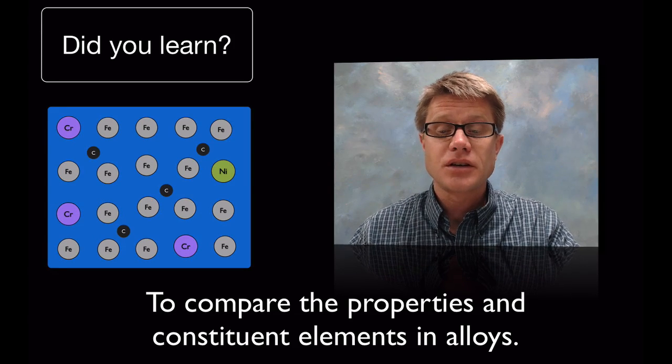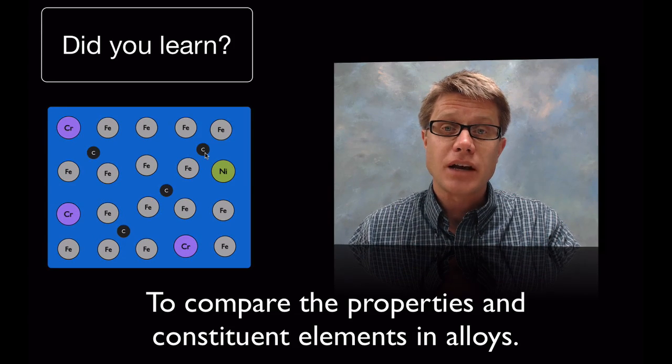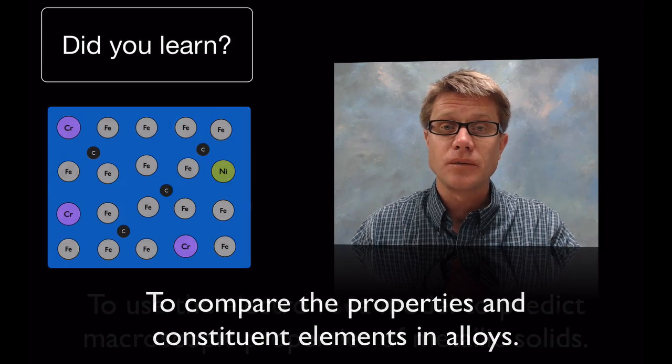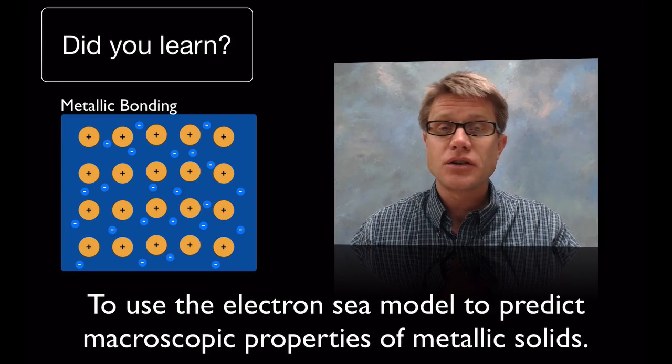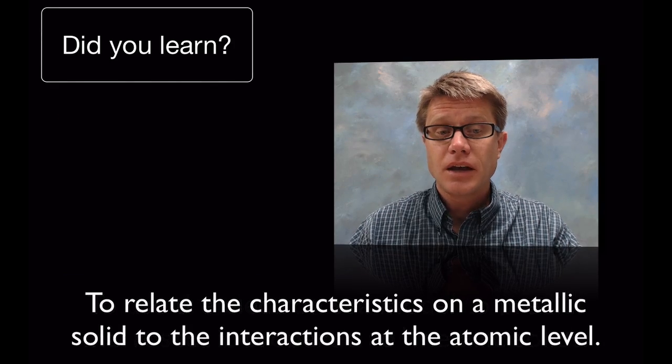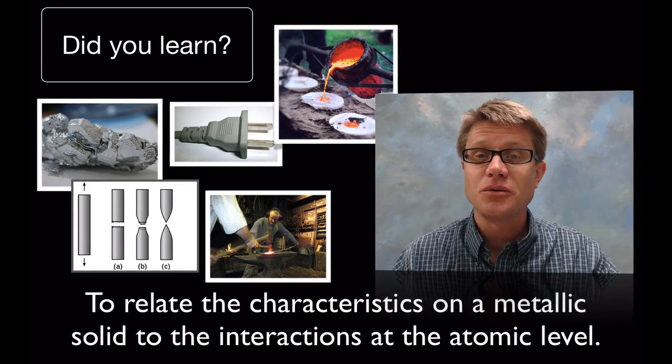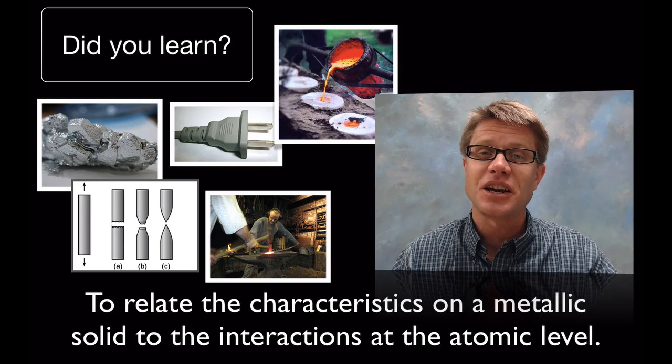Did you learn to compare the properties and constituent elements in an alloy? Those atoms could either fit on the inside, interstitial alloys, or it could be substitutional. And then going back to metals, do you understand this whole electron sea model and how we can use that to predict the different properties of metals? Well if you do then you understand metallic solids. And I hope that was helpful.